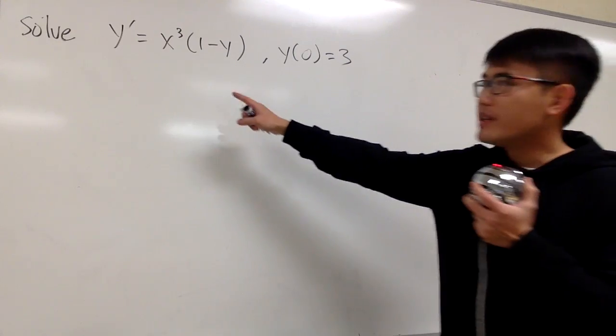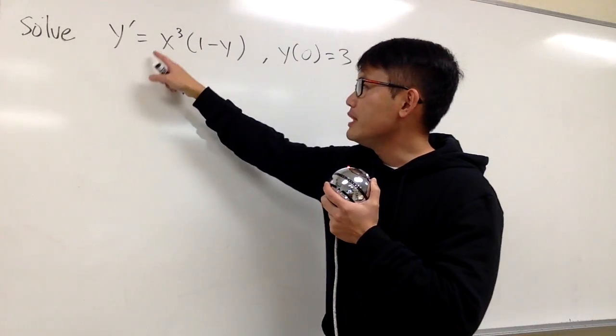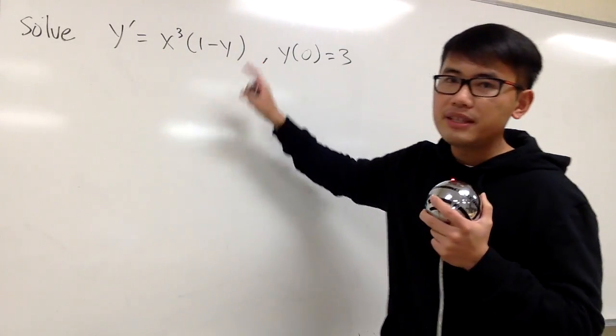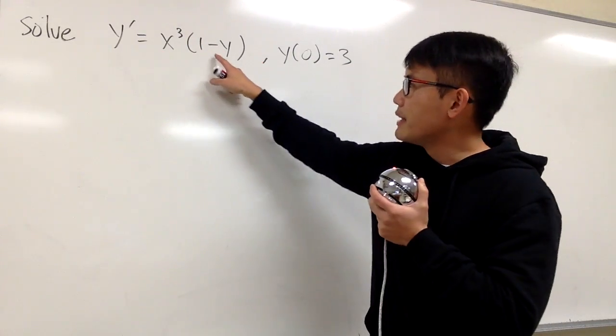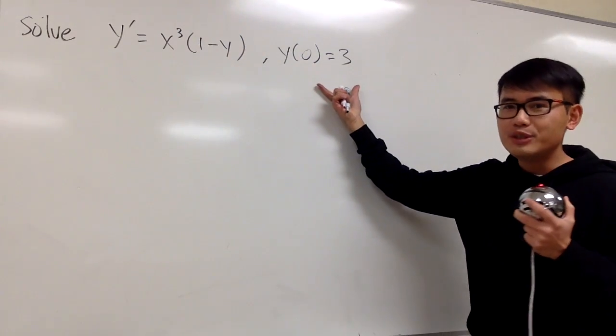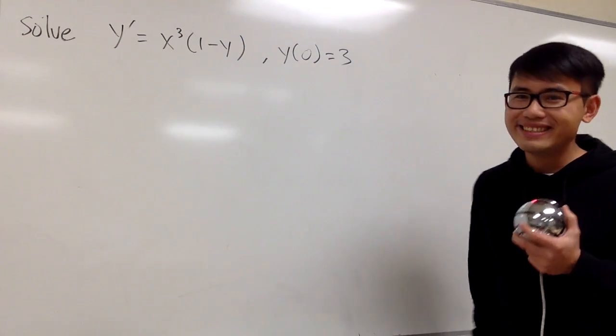Let's solve this differential equation. We have y prime is equal to x to the third power times the parentheses, with 1 minus y inside, and we also have this initial value right here.